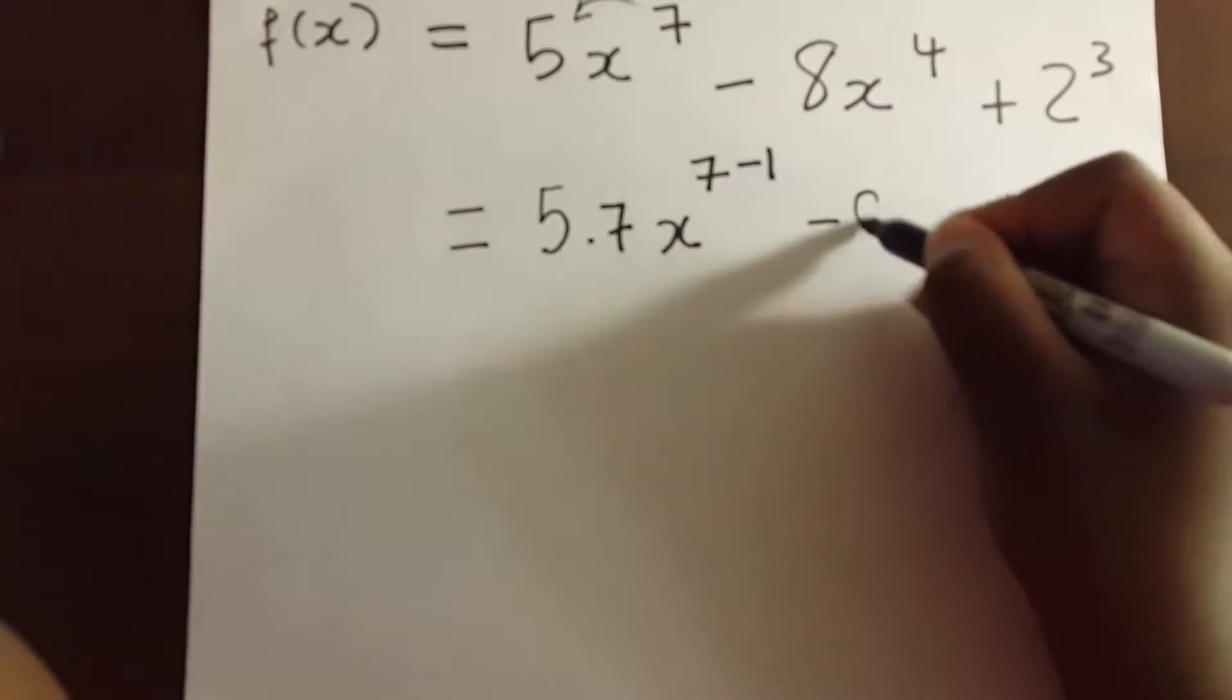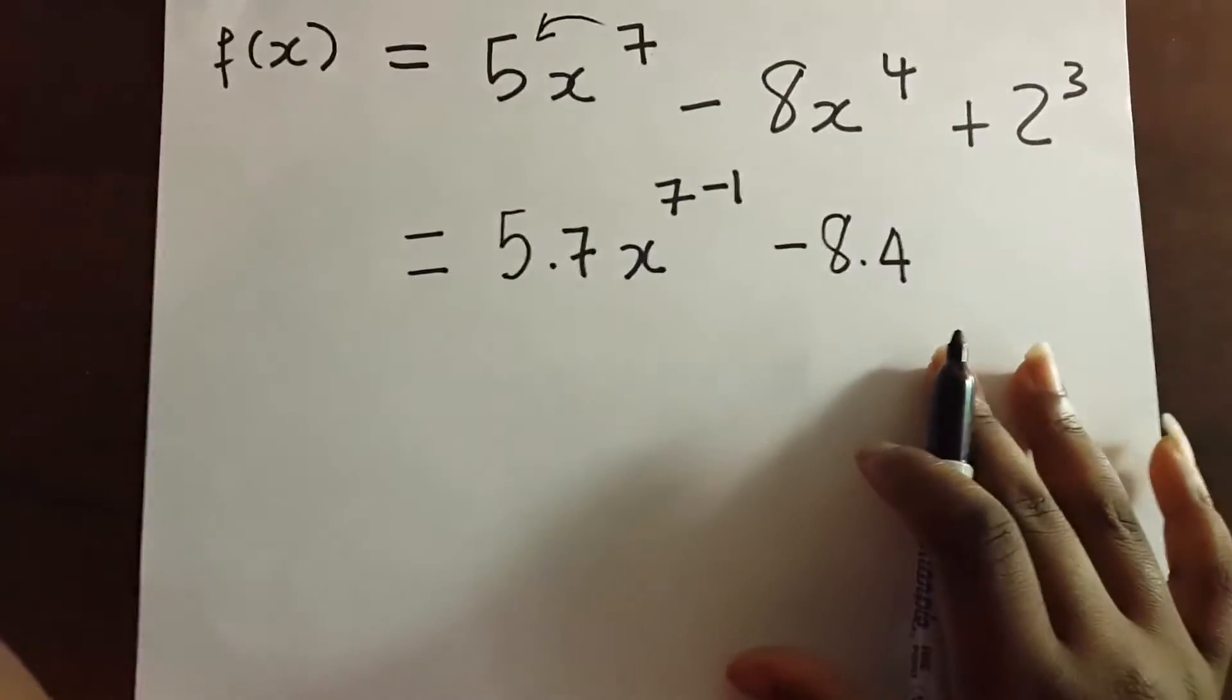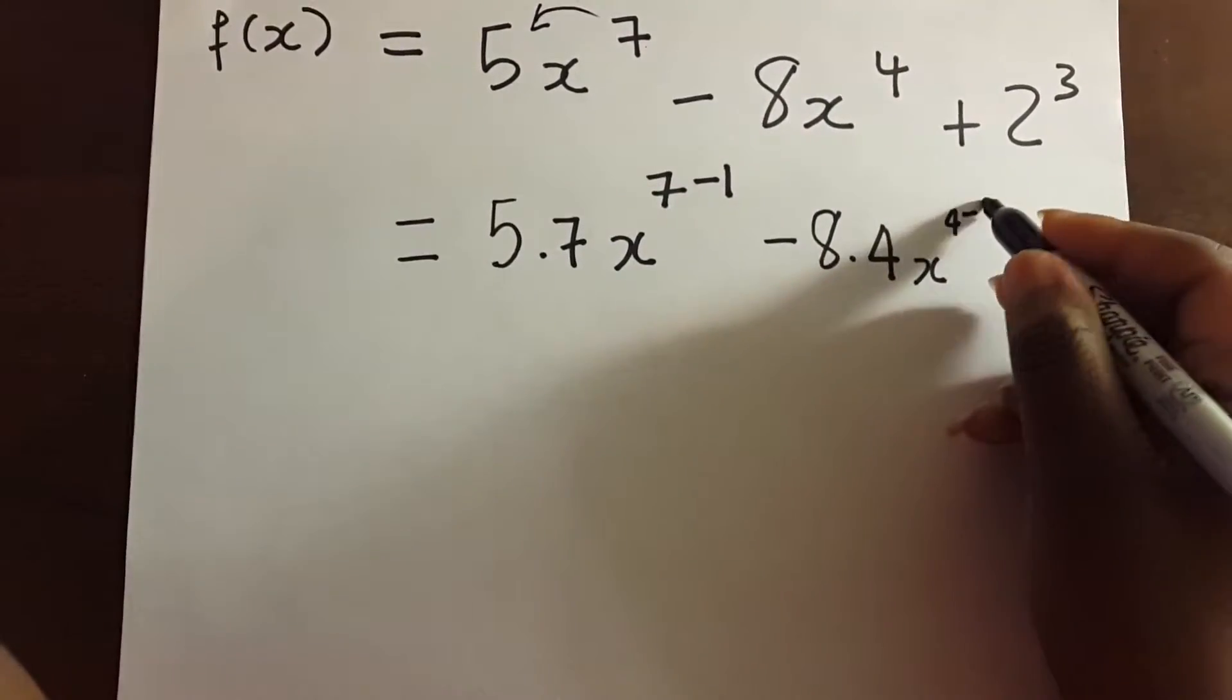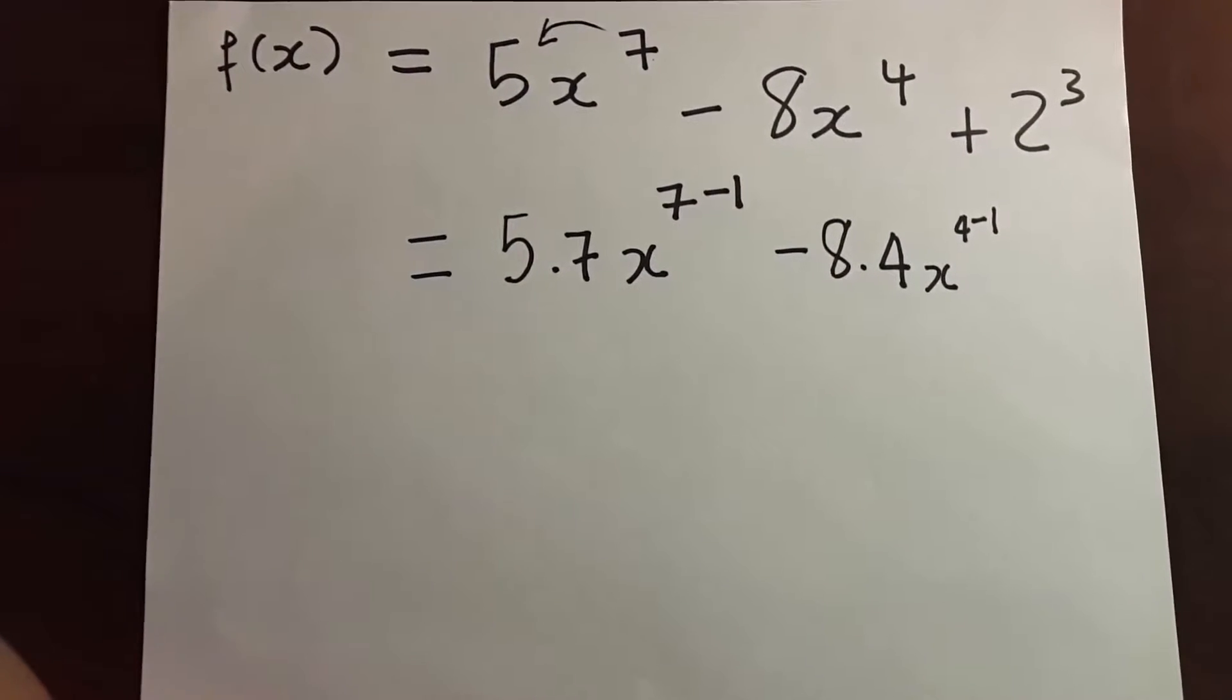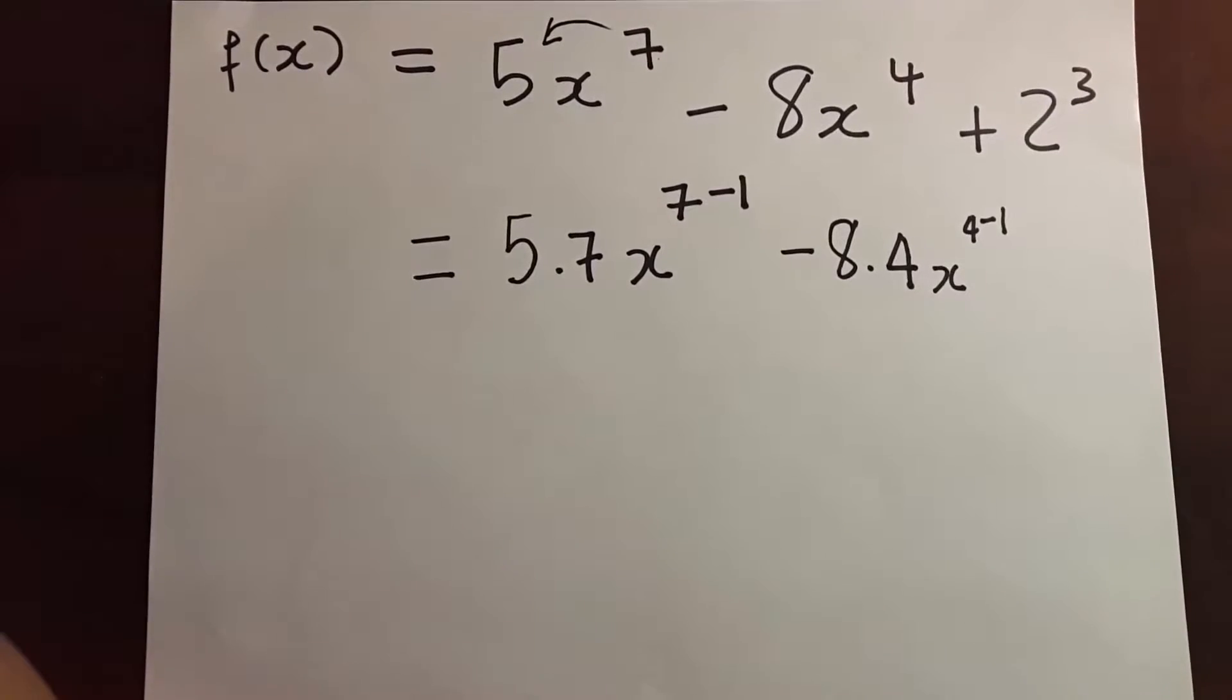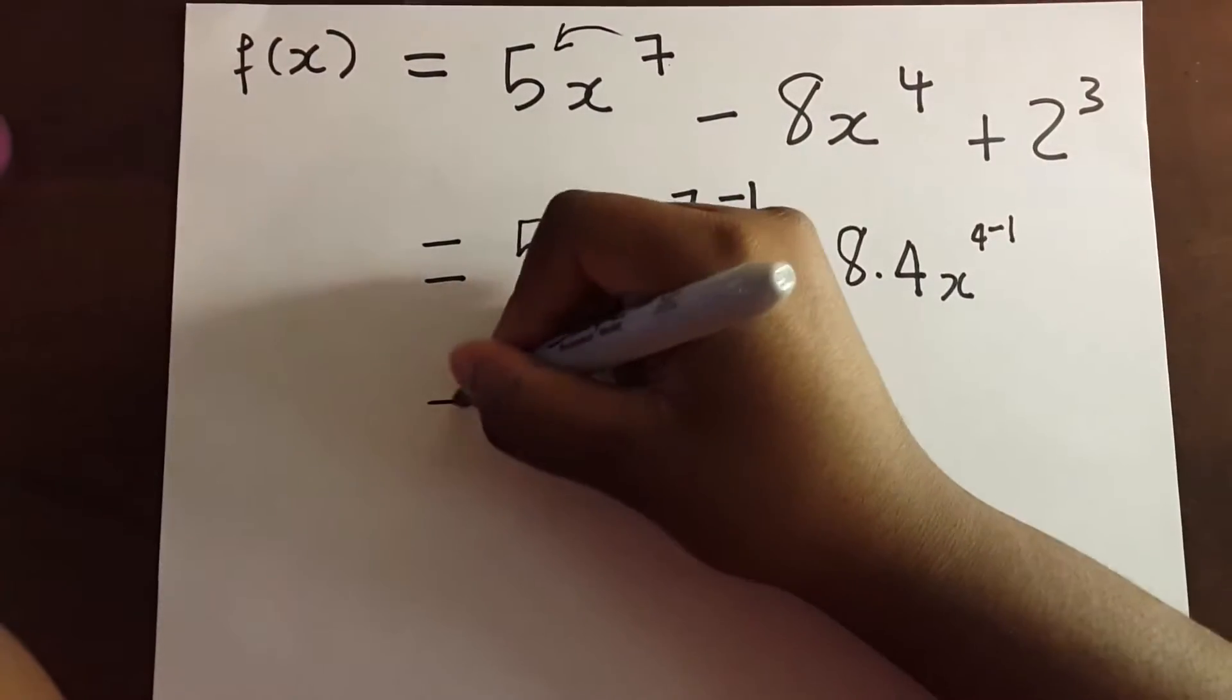In this case you're going to say 8 multiplied by 4, and then x^(4-1). Here it's 2^3, and 2^3 is 8, so it's a constant. Whenever you're asked to differentiate a constant, the answer is always 0, so that one just goes away.